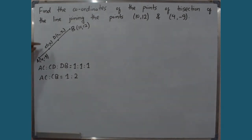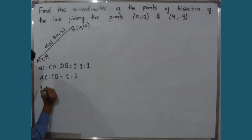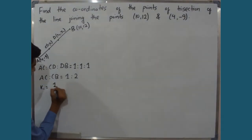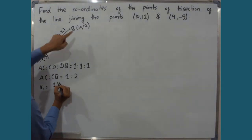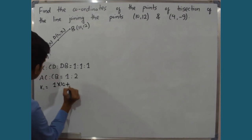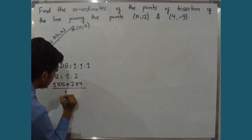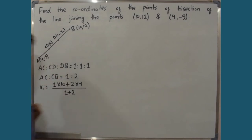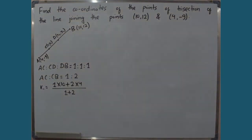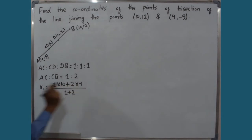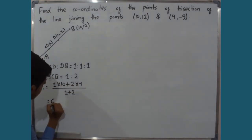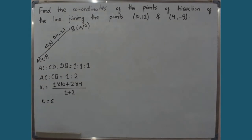Using the section formula to find X1, Y1 coordinates: X1 = (1 × 10 + 2 × 4) / (1 + 2). We get 1 × 10 = 10, plus 2 × 4 = 8, giving 10 + 8 = 18, divided by 3, which equals 6. Therefore, X1 = 6.